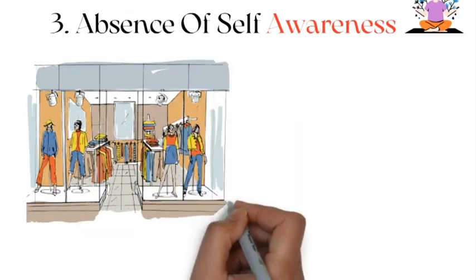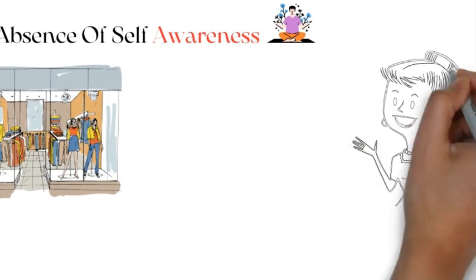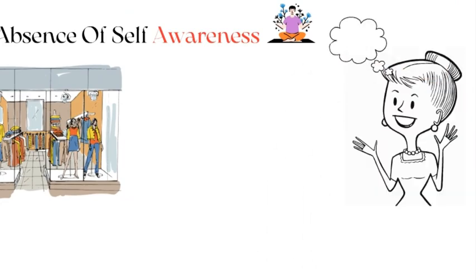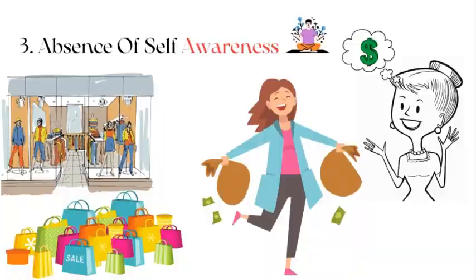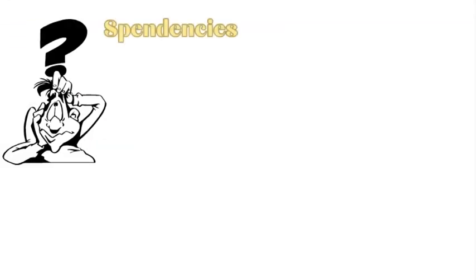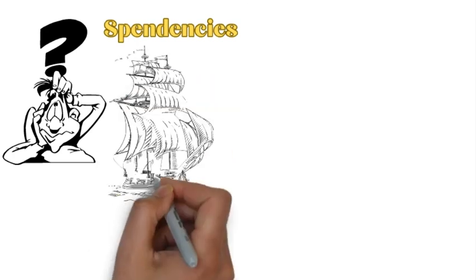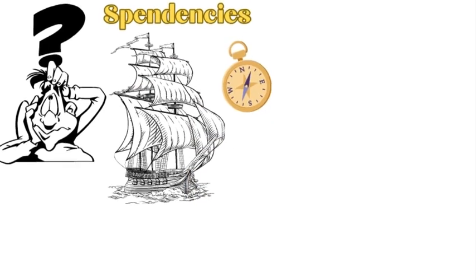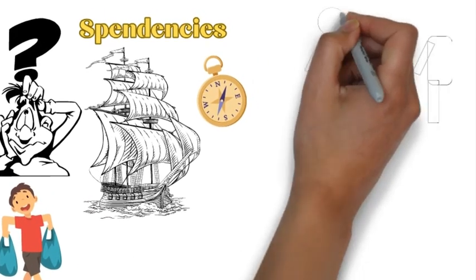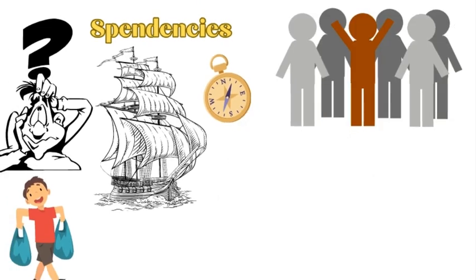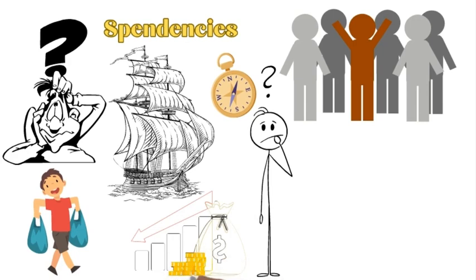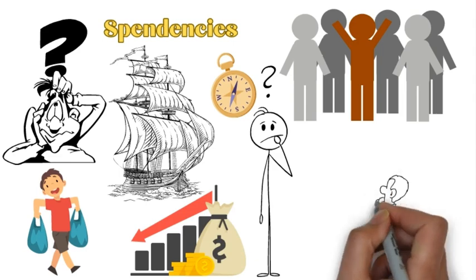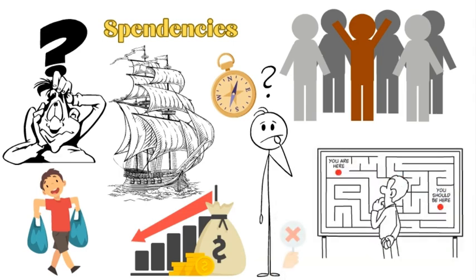3. Absence of self-awareness. Imagine this. You're in a store, surrounded by shiny things calling out to you. Now, if you don't really understand your own money habits, you might find yourself giving in to those impulses without a second thought. It's like going shopping without a plan and ending up with a cart full of things you didn't even need. When you're not aware of your financial tendencies, your spendancies as some call them, you're essentially sailing without a compass in the sea of spending. You might fall for marketing tricks, make emotional purchases, or even just follow the crowd without questioning if it aligns with your financial goals. If you don't know what triggers your spending, you're vulnerable to falling into old habits or making snap decisions that could seriously dent your budget.